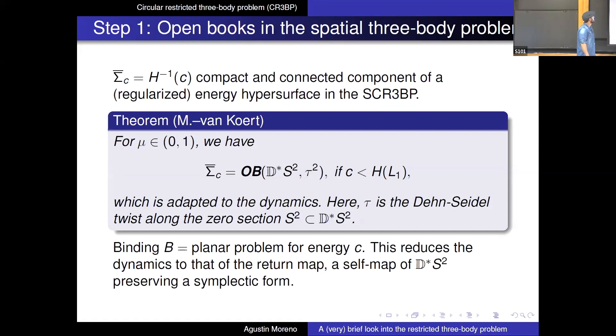So what does step one in the Poincaré approach look like in the spatial problem? So this is a theorem that I proved recently with Otto van Kert, Chris and Sol. So after you compactify your level sets, after you've done Moser regularization, it turns out, and this holds for any mass mu, that these regularized NLC level sets have an open book of this shape, whose page is a copy of D stars 2, and its monodrome is the square of what's called the thin side of this, which is the symplectomorphism of D stars 2, and this open book is adapted to the dynamics. So I can write down some vibration such that every page is transferred to the given dynamics. I don't touch the dynamic system, okay? I adapt everything to it. The binding of this open book is precisely the planar problem, so it's invariant under the flow.